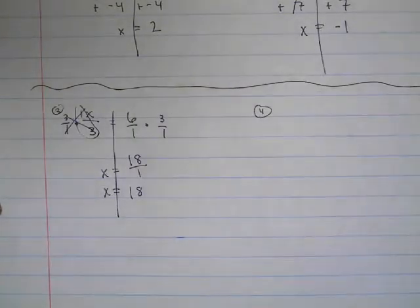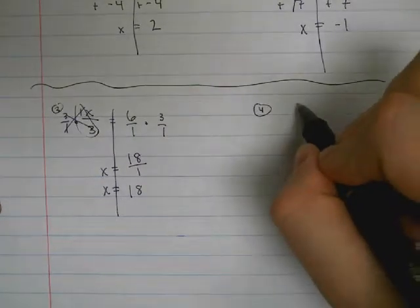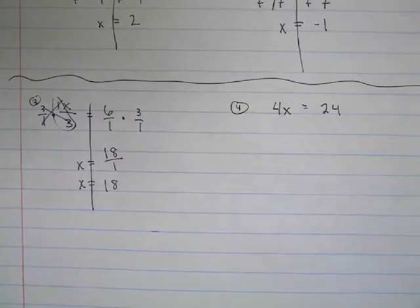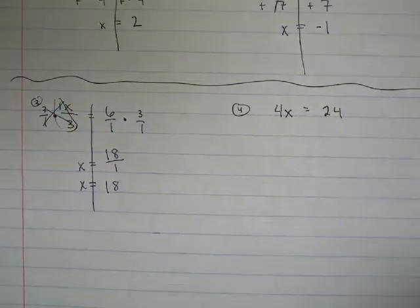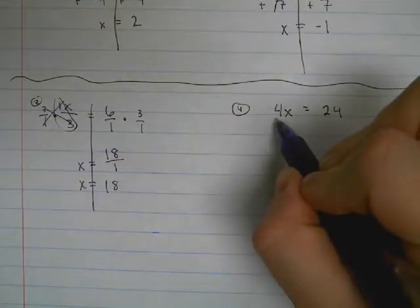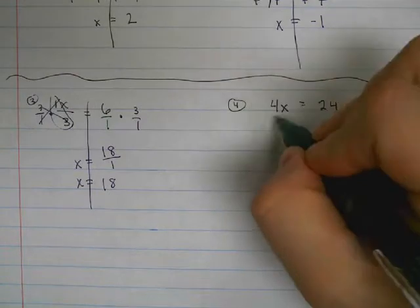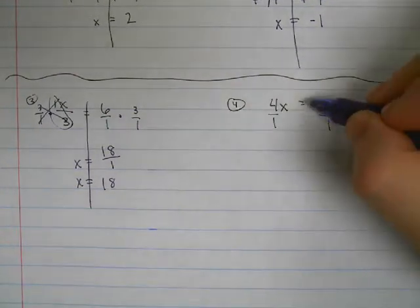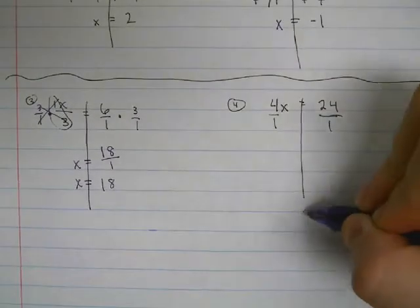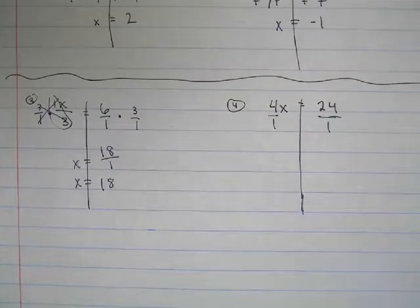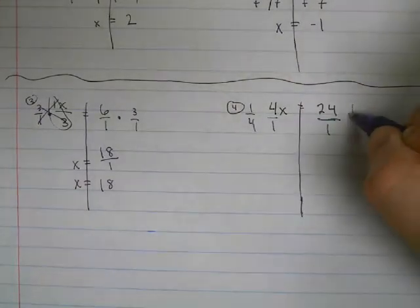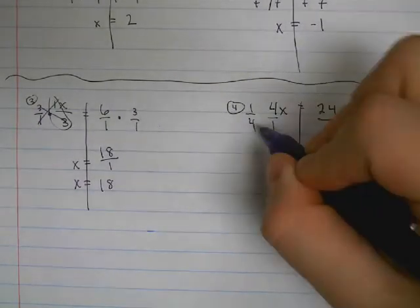Another example would be if I saw something like 4x equals 24. Same process with writing in our hidden ones. We'll draw our line down the middle. Now I'm going to multiply both sides by the reciprocal, so I'm multiplying by 1 over 4. Canceling.